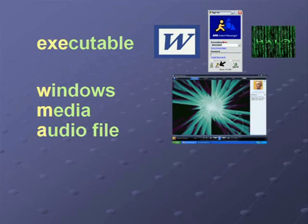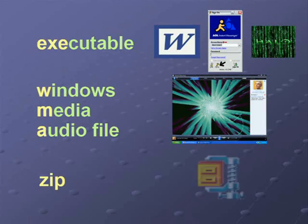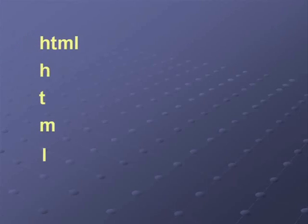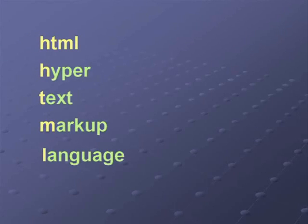Another file extension is ZIP. This is an abbreviation of — well, actually, I guess it's not. It's just ZIP. This is a compression file, or a space-saving file. WinZIP is a very common file compressor. Let's do one more example: HTML, or Hypertext Markup Language. HTML files are used in website design.